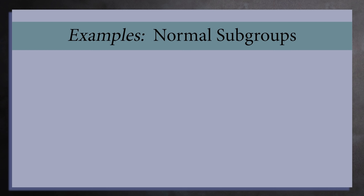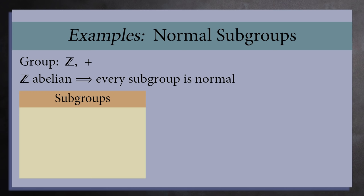Let's see some examples of normal subgroups. Our group will be the group of integers with addition as a group operation. Since this group is abelian, every subgroup is also a normal subgroup.